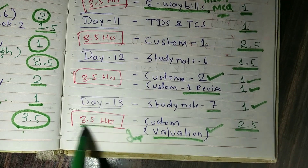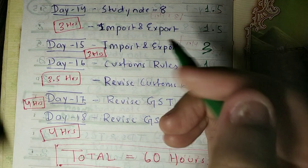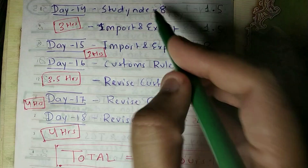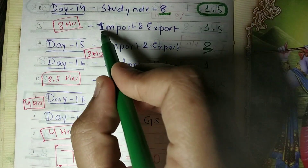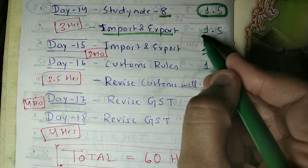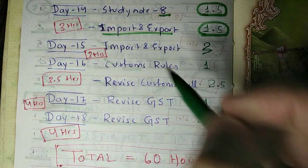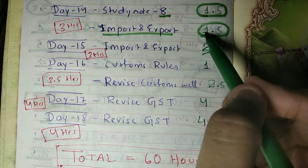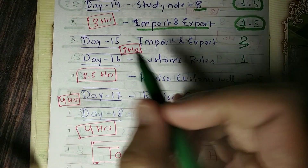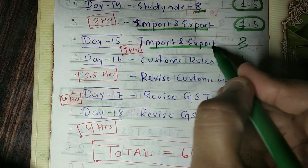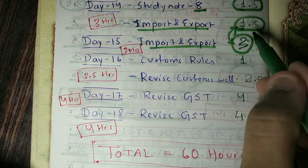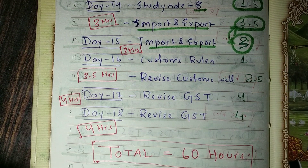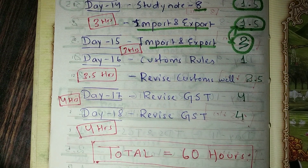Days 13 and 14 will take 3 hours each. On day 14, study note number 8 will take 1.5 hours, followed by an important customs chapter. On day 15, you will study important export topics continuously for 3 to 4 hours — so total for that chapter is about 4.5 hours spread over day 14 and 15.